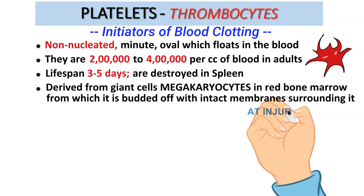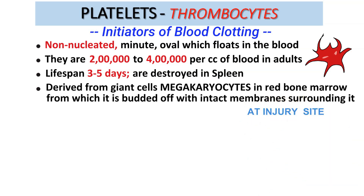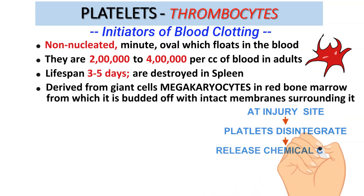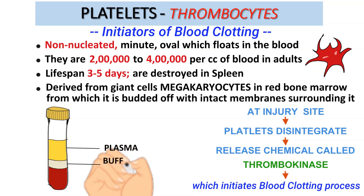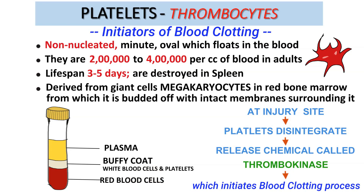Platelets are very important in the blood clotting process. At the site of injury, the platelets disintegrate and release a chemical substance called thrombokinase. Thrombokinase initiates the process of clotting. As you can see in the figure, whole blood has been fractionated and separates into three components by centrifugation. The middle layer, or buffy coat, is a thin layer consisting of platelets and leukocytes. The upper layer is a clear solution of blood plasma and the lower layer consists of red blood cells or erythrocytes.